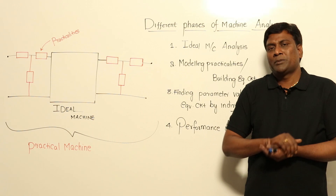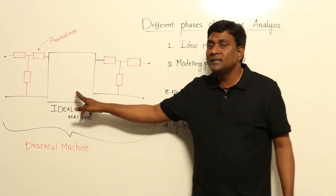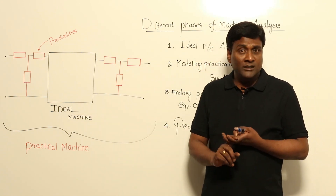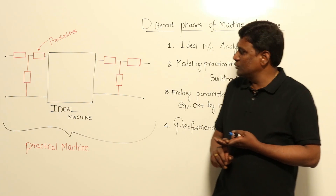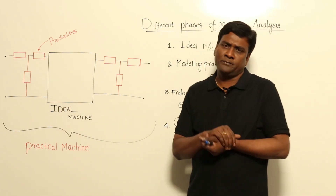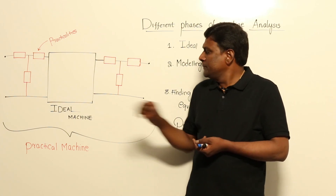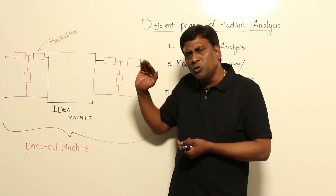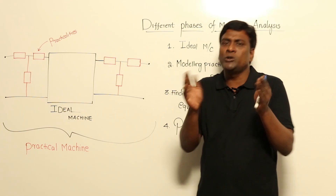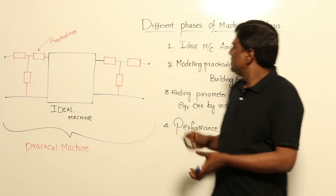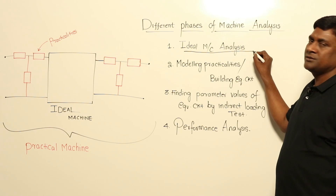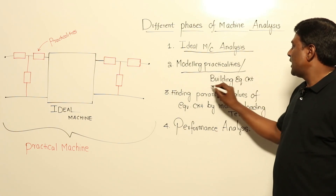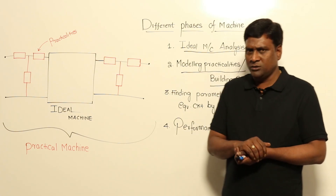Similarly, taking a practical machine — by not considering the practicalities, in its purest form, I will consider an ideal machine. In ideal machine analysis we are not going to consider any losses and not going to consider any effects of non-linearity. We are not neglecting losses; we will consider them at a later point. First, let us analyze in its purest form. This is Phase 1.